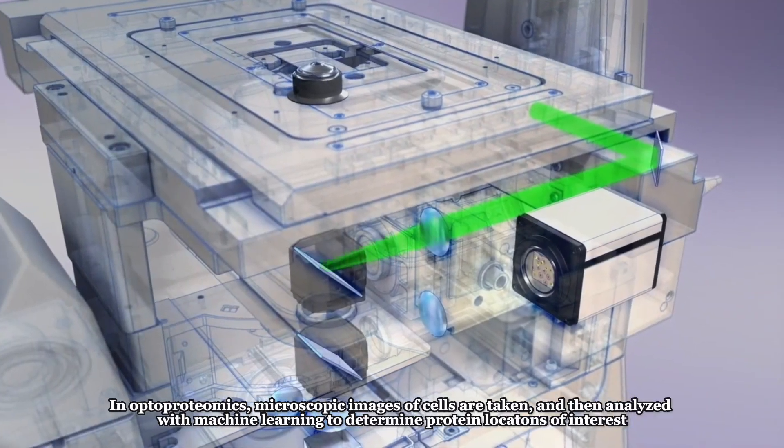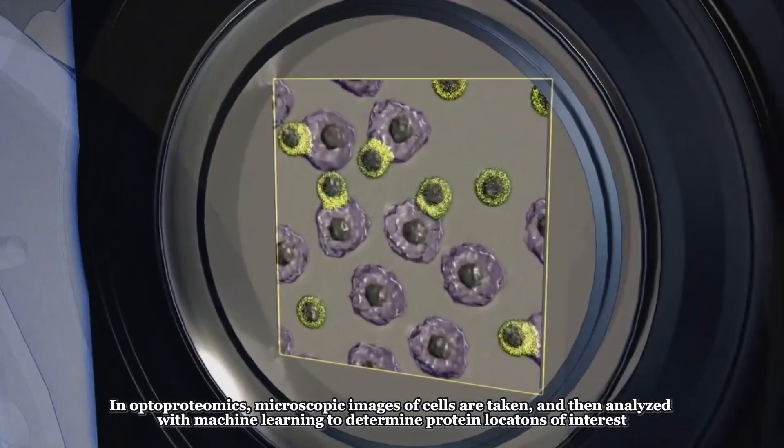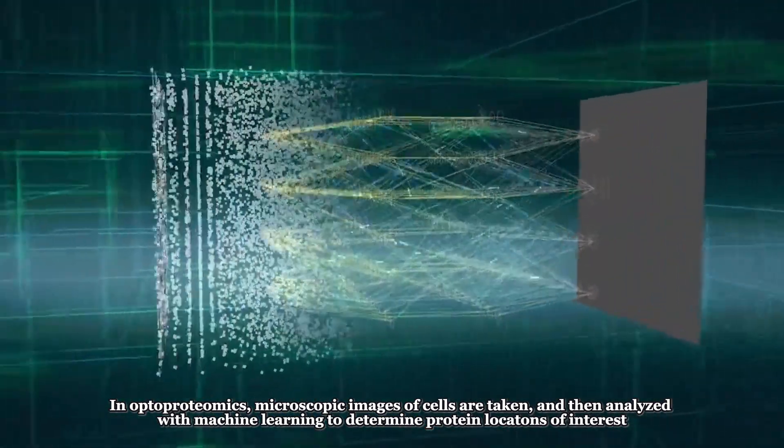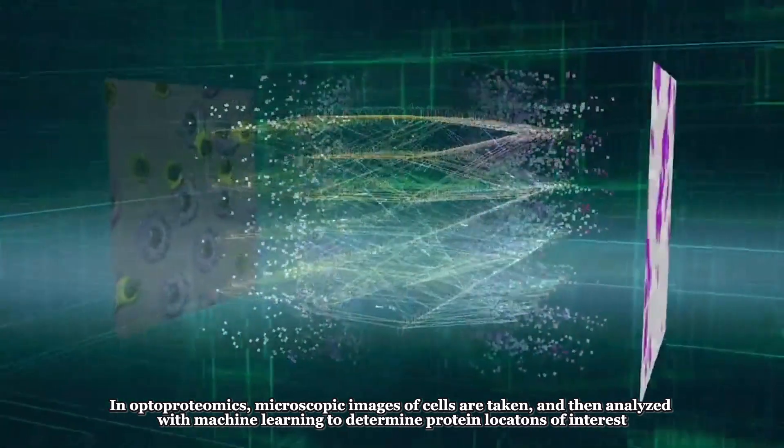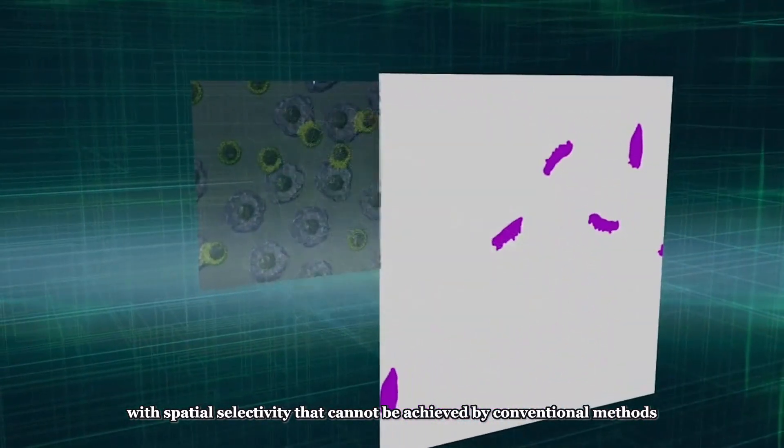In optoproteomics, microscopic images of cells are taken and then analyzed with machine learning to determine protein locations of interest with spatial selectivity that cannot be achieved by conventional methods.